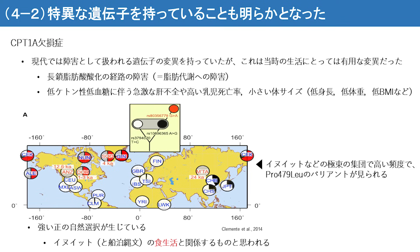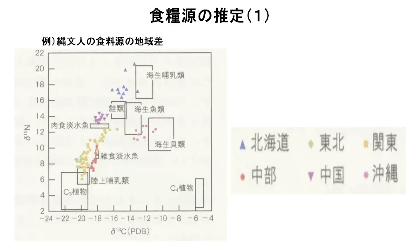このCPT1A遺伝子に生じている突然変異はCPT1A欠損症という病気に関わる遺伝子変異として初めて報告されています。この遺伝子は脂肪代謝に関わっているので、エスキモといった人々には生存に有利ですが、それ以外の集団では生存に不利になります。そのため現代日本人を含む多くの集団ではこの変異を含んでおらず、イヌイットなどでは75%から多い集団では95%の頻度で見られます。このCPT1Aに生じている変異は食生活と関係しているものと思われ、古代人においてこのように食生活と関係する遺伝子が検出されたのは非常に重要な成果です。